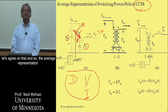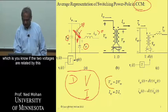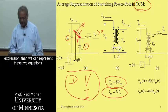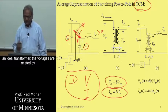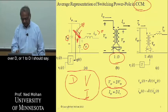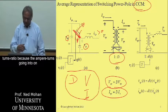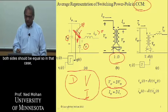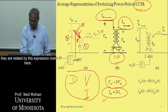The average representation shown in figure B uses an ideal transformer, because if the two voltages are related by one expression and the two currents are related by another, we can represent these two equations by an ideal transformer. The turns ratio turns out to be 1 to D. The currents are related by the inverse of the turns ratio, since ampere-turns on both sides should be equal.